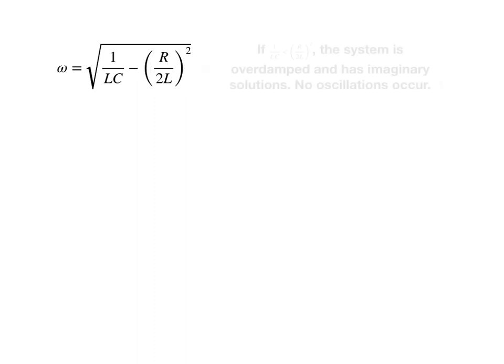The final possibility is the overdamped system. If 1 over LC is less than quantity R over 2L squared, notice we get imaginary solutions. No oscillations occur in a mechanical system. This would be analogous to taking whatever is oscillating and drenching it in molasses. So there's a lot of resistive force. In the case of the discharging capacitor in an RLC circuit, this has the effect of going... The current will go to zero, but it actually goes to zero a lot more slowly than it does in the normal RLC circuit.